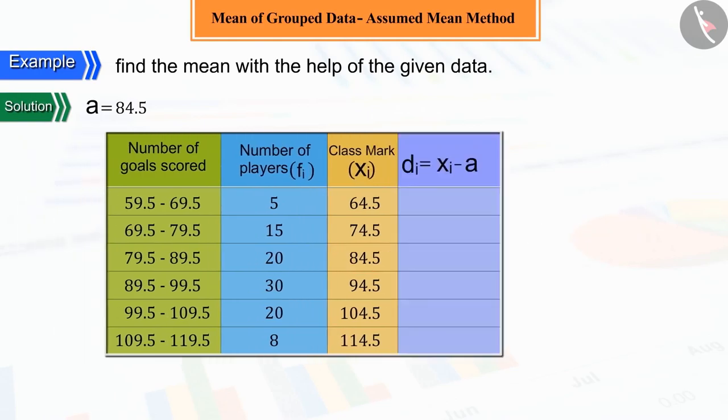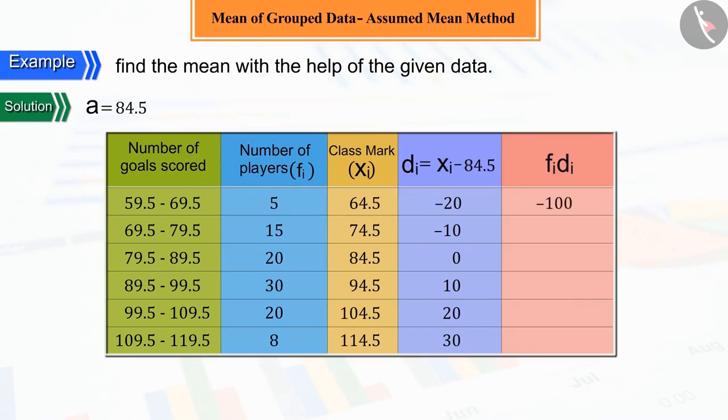The difference between A and each xi is represented by di. And find the value of fi di.